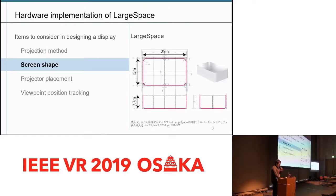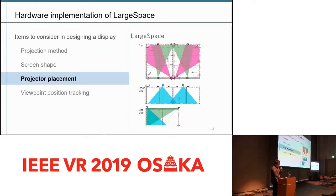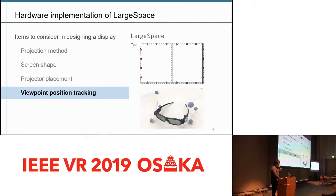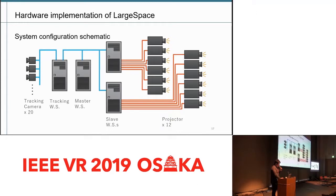The second implementation is about screen shape. Light space used a compound curved screen to eliminate image breaks, as shown on the right. The third implementation is about projector placement. Light space projects with 12 projectors throughout the system. The last implementation is about viewpoint position tracking. In light space, 20 optical motion tracking cameras were used to measure the position of 3D glasses with markers. This implementation is all controlled by four synchronized control clusters.